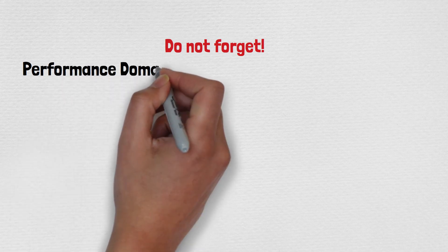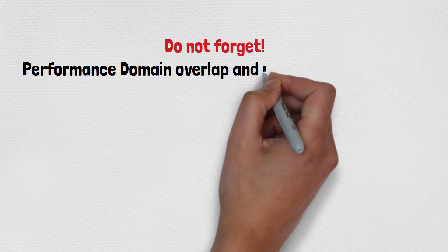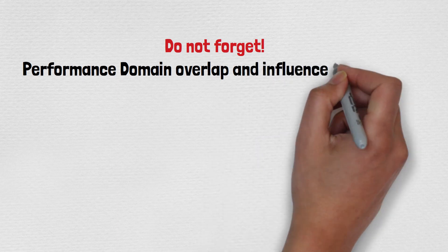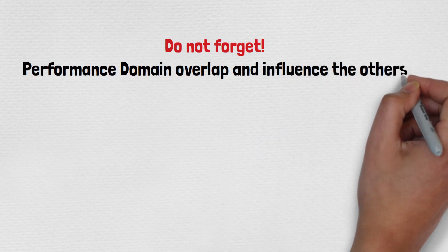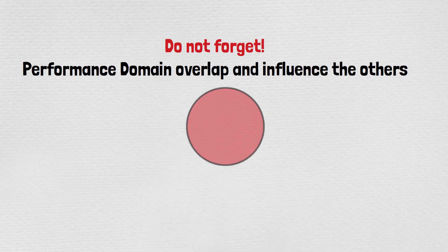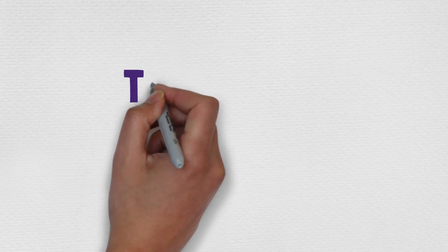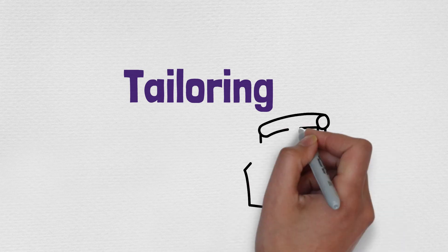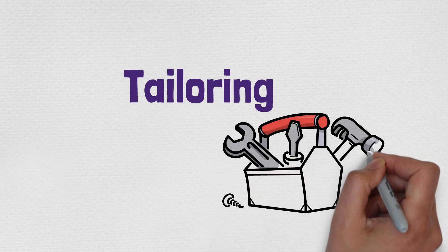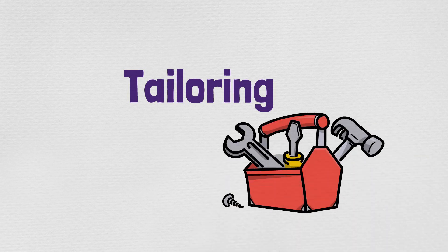Remember that these performance domains are interdependent, overlapping, and influence each other — there's a very fluid process going on across all domains. For example, planning, delivery, and lifecycle are very fluid and interdependent on each other. The next important topic in PMBOK 7 is tailoring; I'll be doing a separate video on that since it's a vast area needing more discussion.